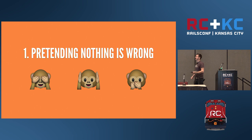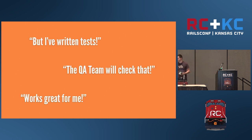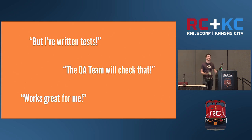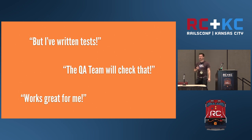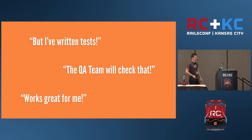I talked to a big customer the other day and asked how they do production monitoring. They said: we wait until our customers let us know. That was terrifying. Common symptoms of this sin include: 'I've written tests' — of course, that means you've covered every piece of data in every scenario. No way. 'The QA team will check that' — I heard this said in a company that didn't even have a QA team. 'Works great for me' — works great in development. Testing is only part of the process. You can only test for things you can predict, and most production problems are things you couldn't think about or didn't expect.